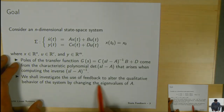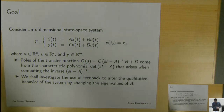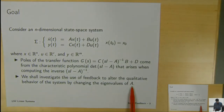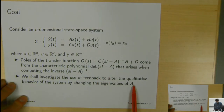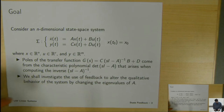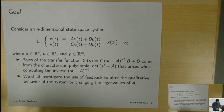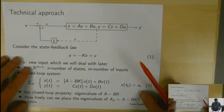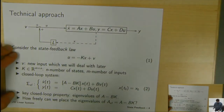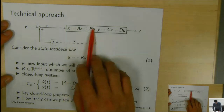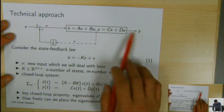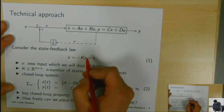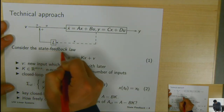The whole idea about closed-loop design is to use feedback to change the system by changing the eigenvalues of the closed-loop matrix. We want to change from the eigenvalues of A to something that benefits the control tasks. For example, if A is unstable, the control task is to make the closed-loop poles stable.